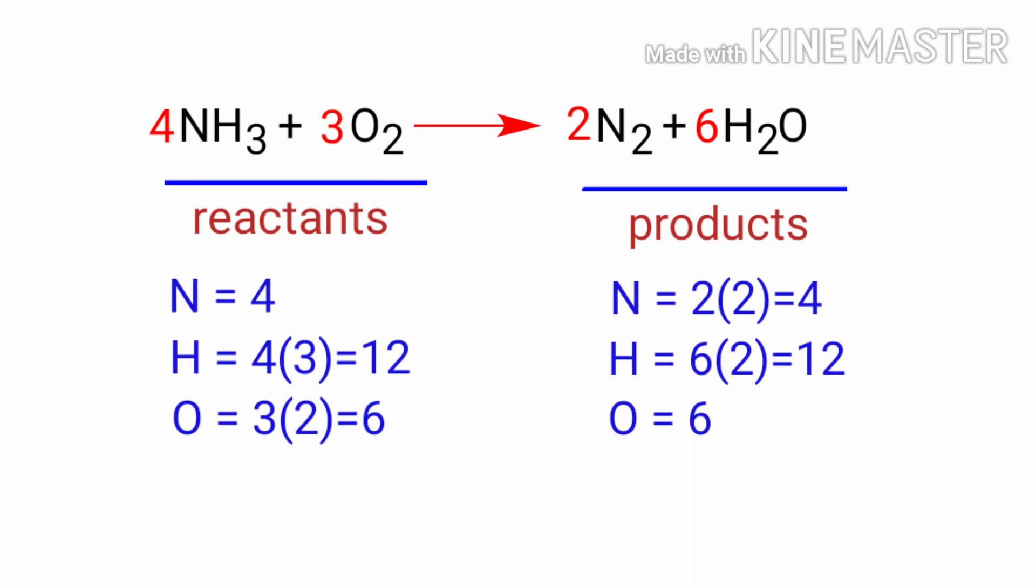The equation is now balanced. There are four nitrogen atoms, twelve hydrogen atoms, and six oxygen atoms on both sides.